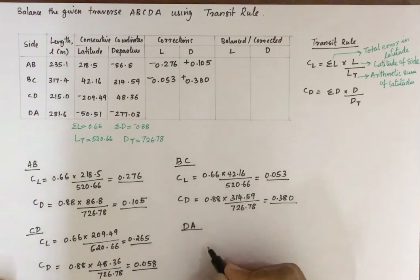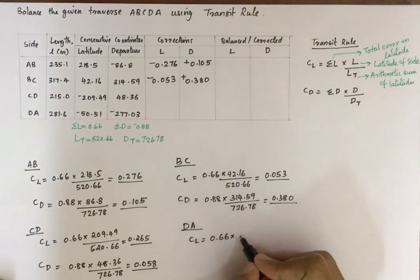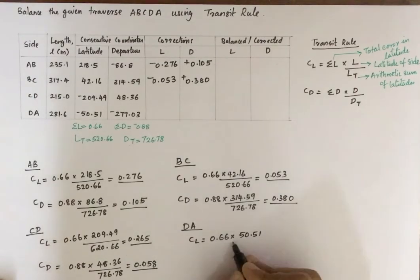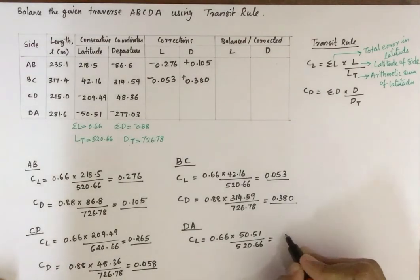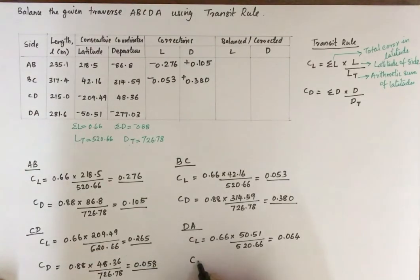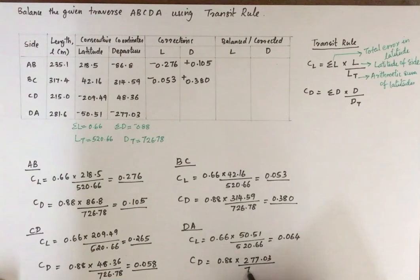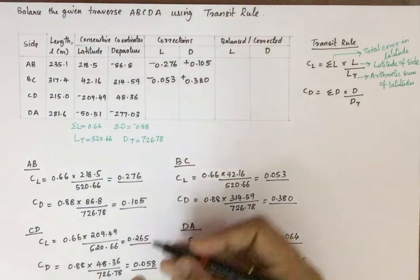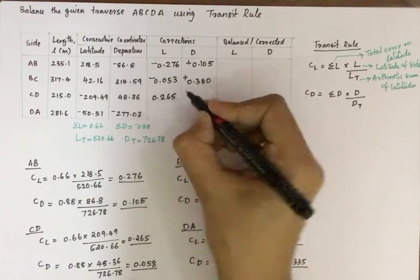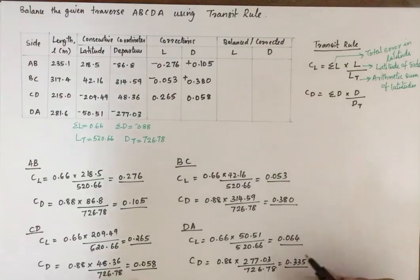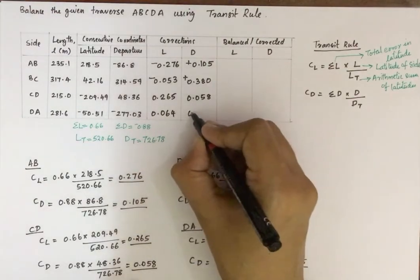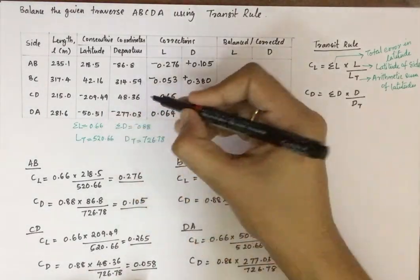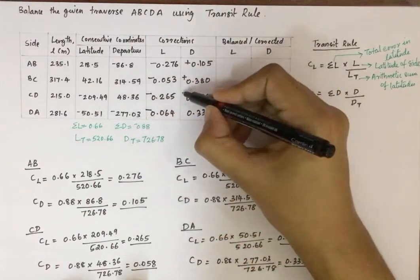For side DA, the correction to latitude is 0.66 multiplied by the latitude of DA (50.51), divided by 520.66, giving 0.064. The correction to departure is 0.88 multiplied by the departure of DA (277.03), divided by 726.78, giving 0.335. Summary of corrections: 0.265 and 0.058 for CD; 0.064 and 0.335 for DA. Error positive means correction negative; error negative means correction positive.